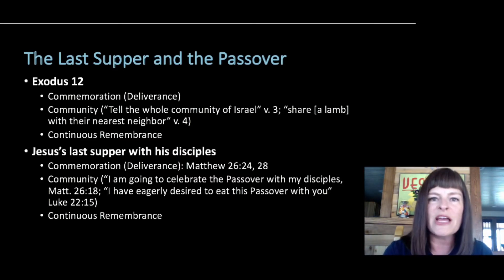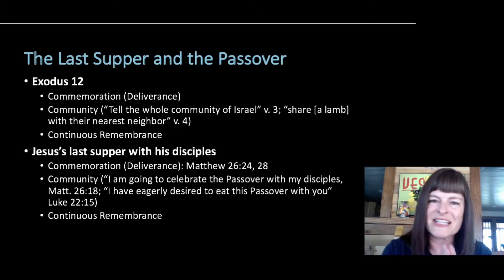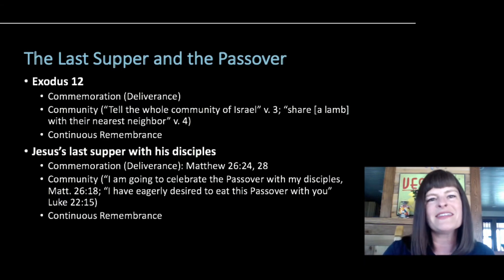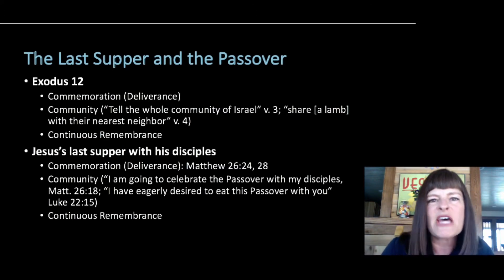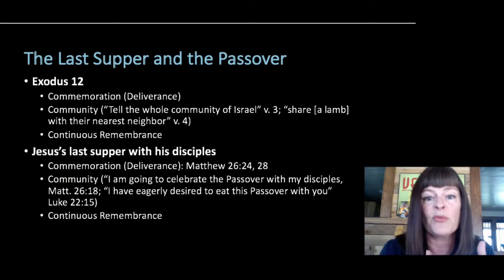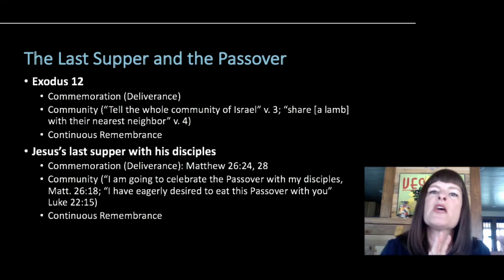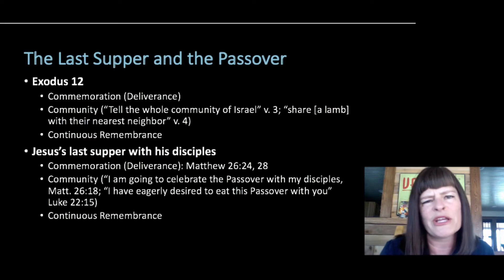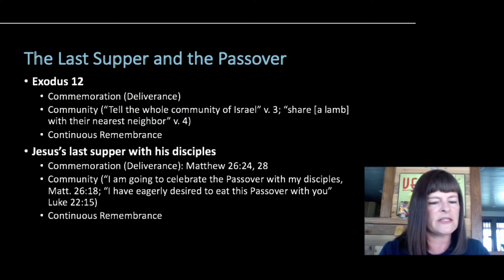There is a commemoration of the deliverance of Israel, and the role that blood plays in that — even the feasting on a lamb is significant. On community: it says 'tell the whole community of Israel to get together and do this forever more.' If the lamb is too large for a small household, you need to get together with your nearest neighbors and share in this feast together. This idea of community really comes through in the Passover directions.